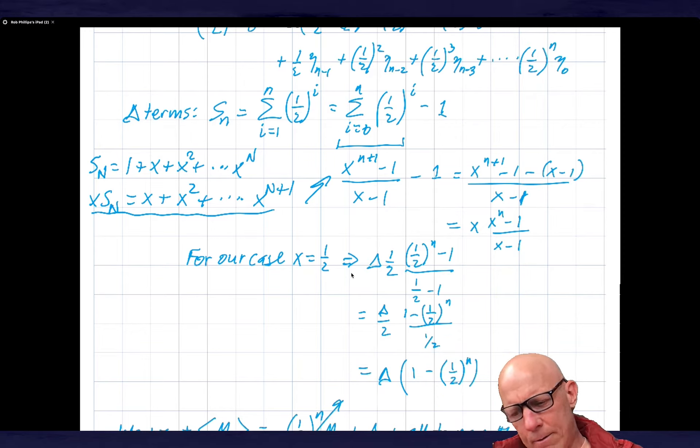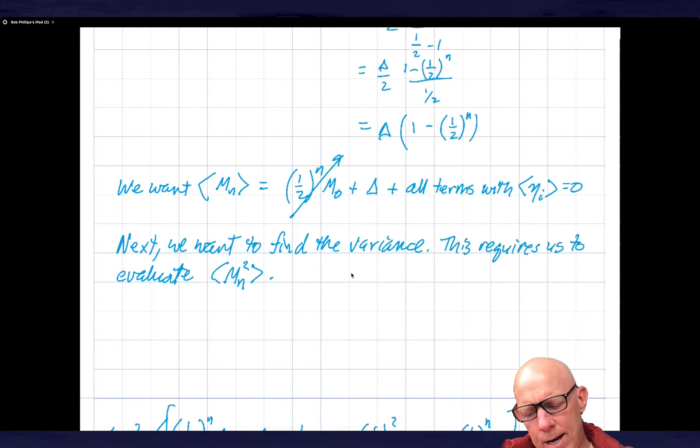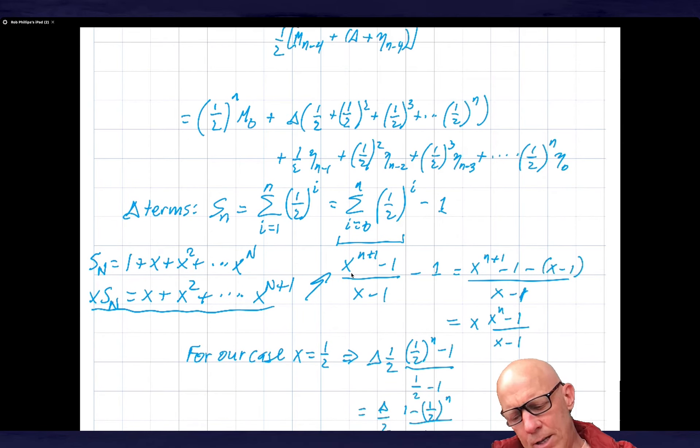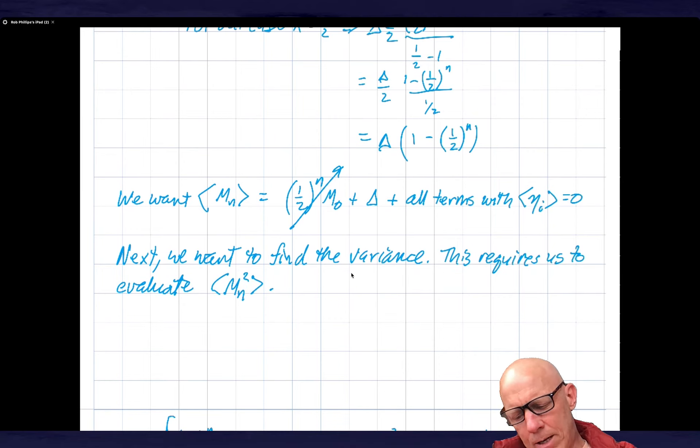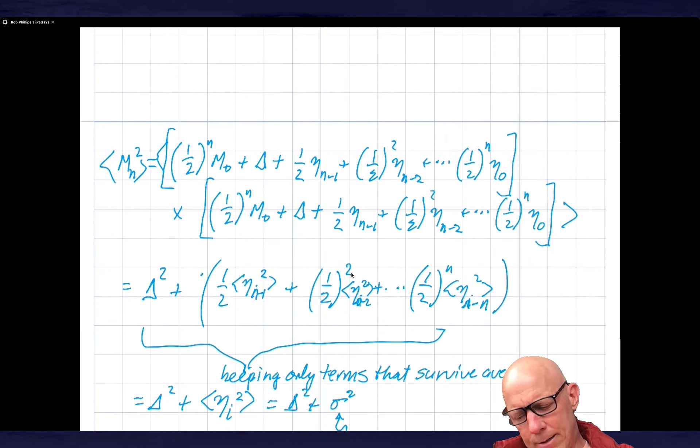This is what I get for the delta term. If I want to find the average mass at birth in the nth generation, I take the average of this whole expression. Because n is large, this term goes away. I get delta as the mass at birth, and all these statistical terms vanish because they come in at first order.